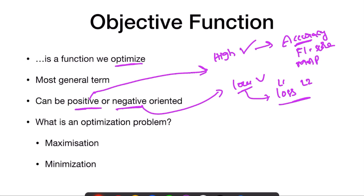Objective function means we don't know what the function is — it can be positive or negative oriented. Depending on the function, we either do maximization or minimization, which is what we generally call an optimization problem.